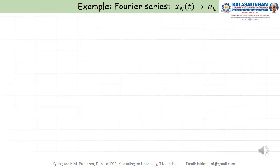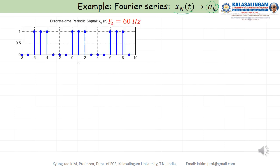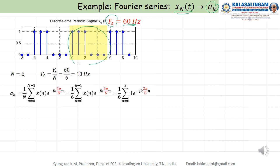Let me take one example of how to get a_k. x of n equals this, with F_S equal to 60 hertz. This is one period, therefore N equals 6. The fundamental frequency equals F_S over N equals 60 over 6 equals 10 hertz. All frequencies are 0, 10, 20, 30, and so on — there is no 15, 16, or 21 hertz. We call these harmonics.